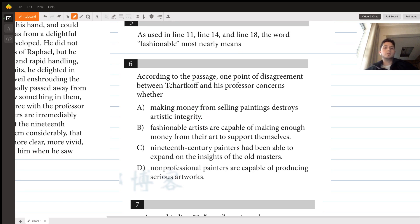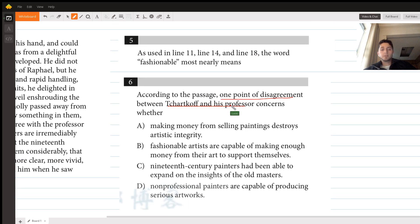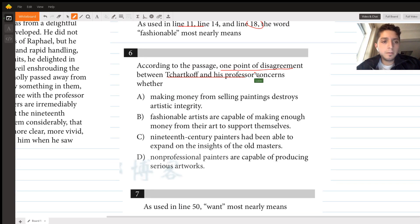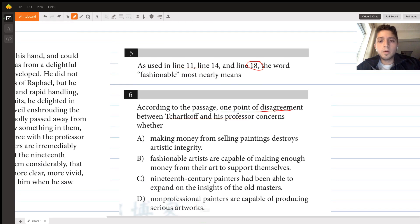The way to solve this is to go back to the passage and look for text that can answer this question. We're going to look for anything that talks about a point of disagreement between Tcharkoff and his professor, and we're going to use the question order rule. In question 5 we have lines 11, 14, and 18 mentioned, with the last one being 18. In question 6 we have this last line, line 50 mentioned. So it's pretty plausible that between lines 18 and 50, we're going to be able to find the text that will tell us about this point of disagreement.